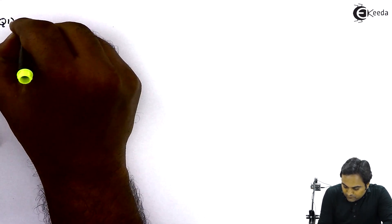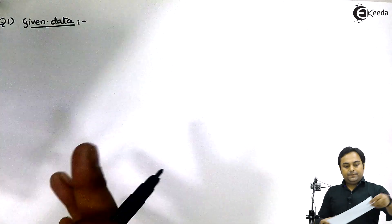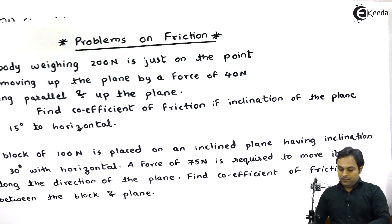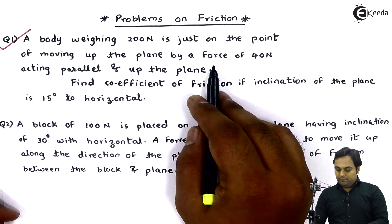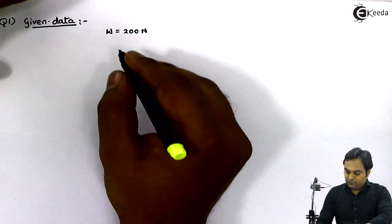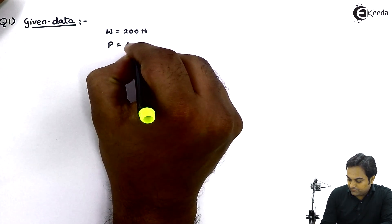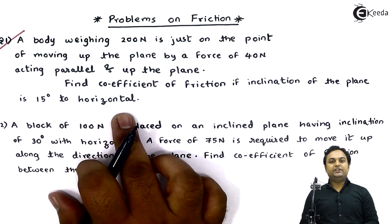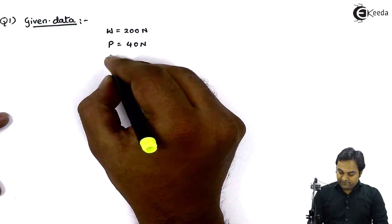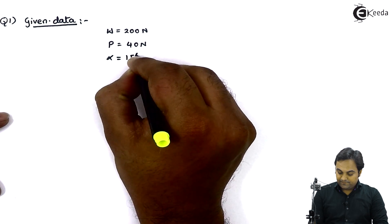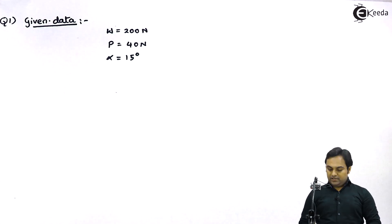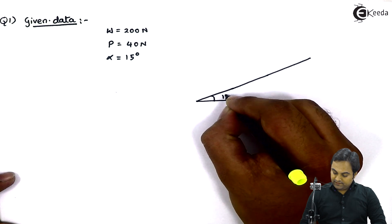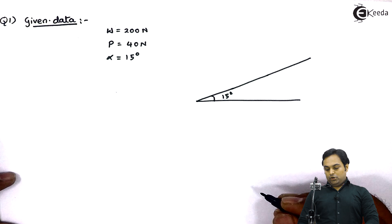In question number one, the weight of the body is 200 Newton. The body is just on the point of moving up the plane by a force of 40 Newton, so the applied force P is equal to 40 Newton. We need to find the coefficient of friction, given the inclination of the plane is 15 degrees to horizontal. Based on this, I would be drawing a diagram — a plane inclined at 15 degrees as given.